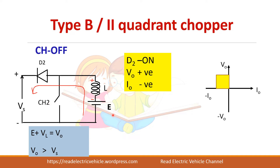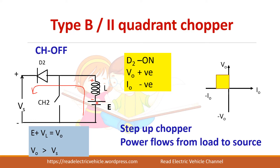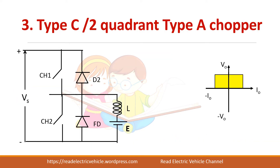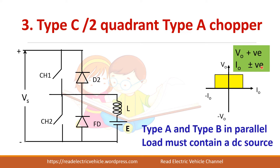Next is Type C, or the two-quadrant Type A chopper, which operates in the first and second quadrants. Voltage is positive but current can be positive or negative. Type A and Type B choppers are connected in parallel: Chopper 1 and its freewheeling diode form the Type A section, and Chopper 2 and diode D2 form the Type B section, sharing a common load.